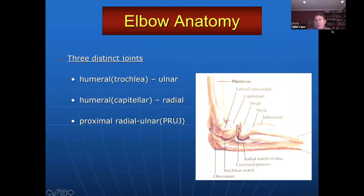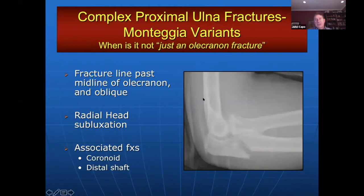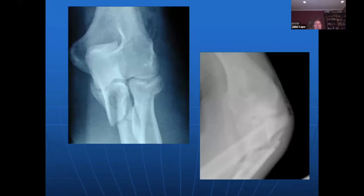Dr. Capo: The elbow is critical. The humero-ulnar joint is the important hinge joint; the radial capitellar joint is somewhat accessory but still important; and then there's the PRUJ we can't forget. Monteggia fractures are a different animal than an olecranon fracture — it's a proximal ulna fracture with something going on with the radial head, making it a complex proximal ulna. If it includes the coronoid, it's even more difficult, and the radial head may be subluxating anteriorly or posteriorly. These are bad actors.